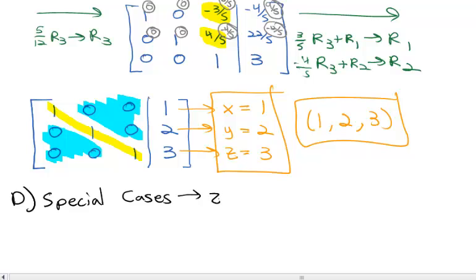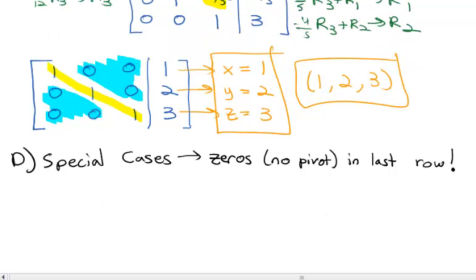Sometimes we end up with all 0's in the last row, meaning there's no pivot. Those are the same special cases as in elimination — we'll have either 0 = 0 or 0 = a number, meaning either no solution or infinite solutions.